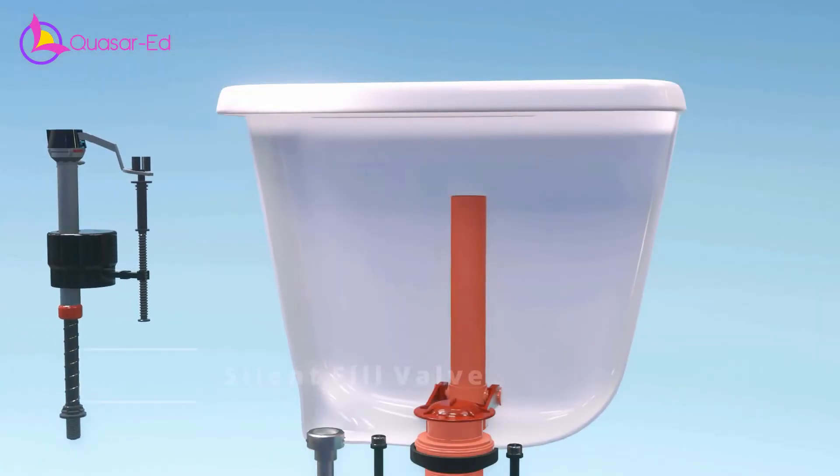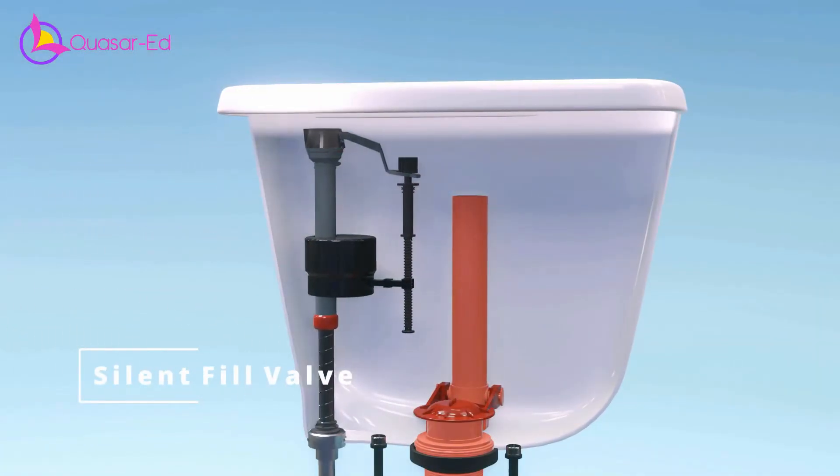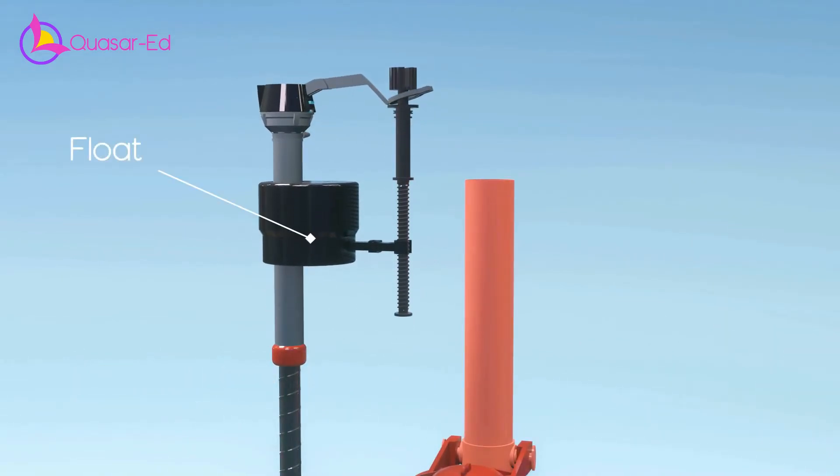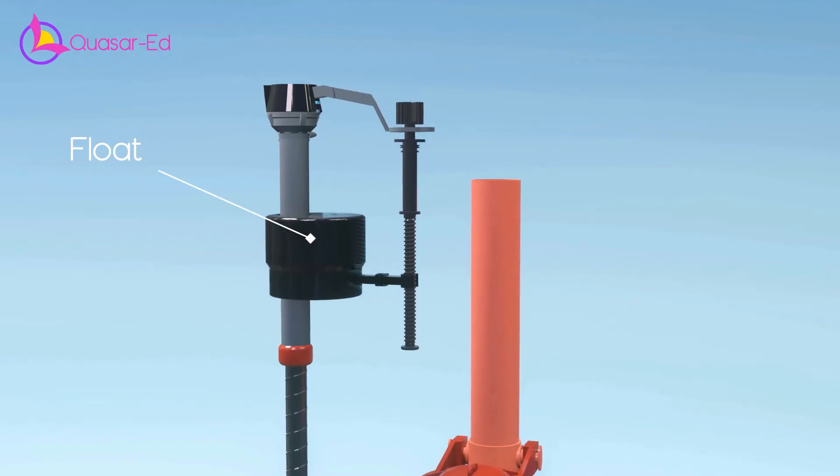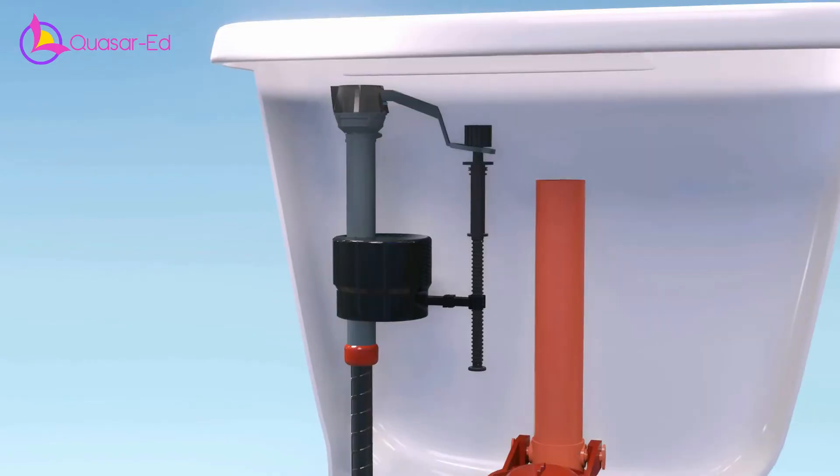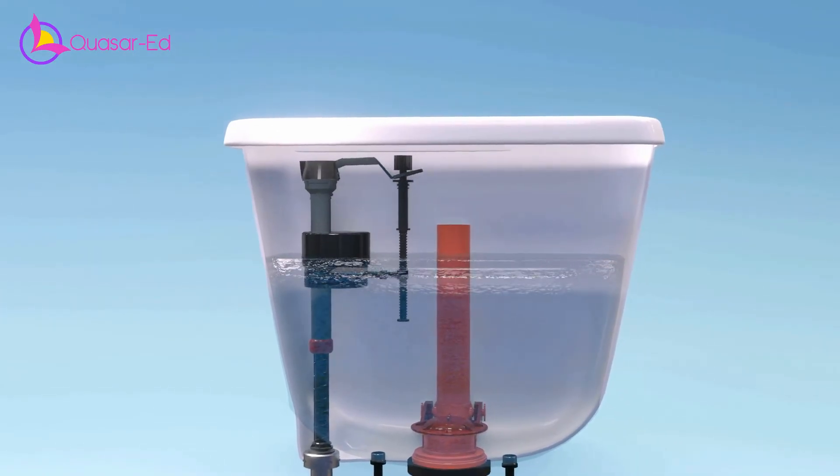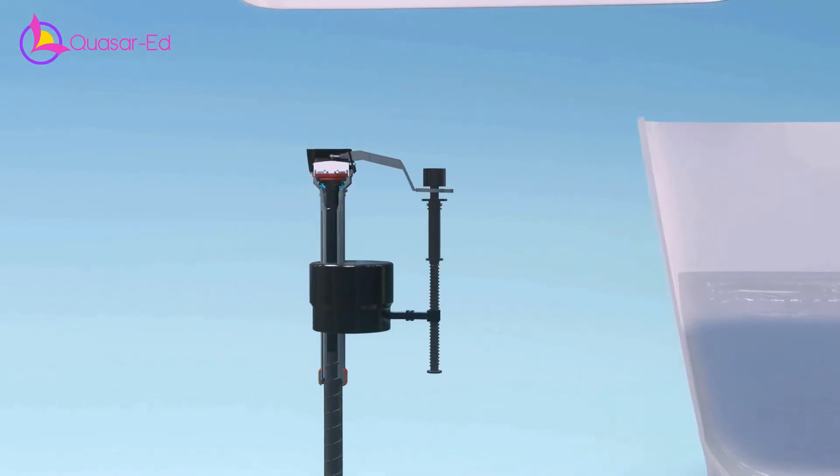Therefore, new modern toilets use the silent fill valve design. In this design, instead of a ball float with attached to a lever, it uses a cylinder float that goes up and down over the pipe. The motion of the float is transferred to a lever. When the water reaches its assigned level, the float moves up and needs to close the water filling.